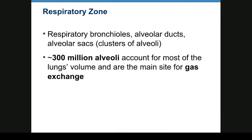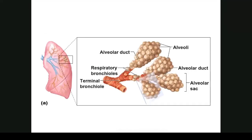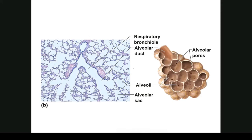The respiratory zone includes respiratory bronchioles, alveolar ducts, and alveolar sacs. There are about 300 million alveoli making up the mass of the lung — so any picture is going to be disproportional, showing only around 150 alveoli. The alveoli are individual little round sacs connected with pores. Looking at this picture, it's easy to explain emphysema: pores rupture and merge into one larger space, reducing surface area for gas exchange.